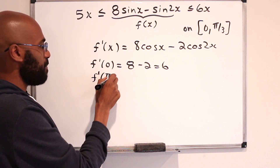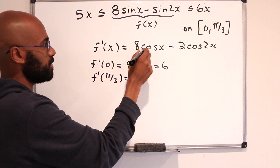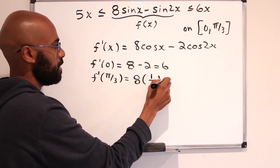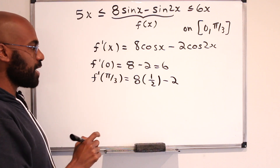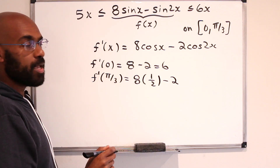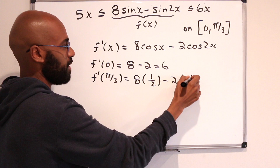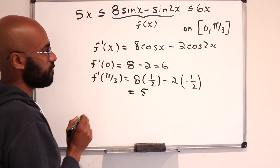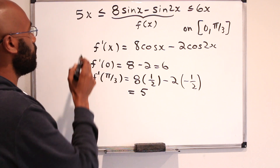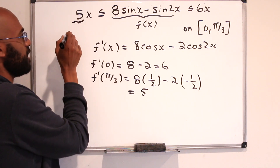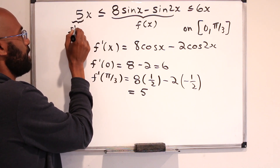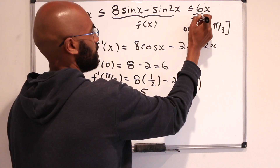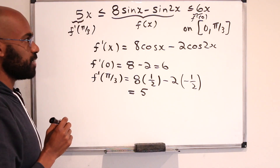Now the derivative at π/3 is 8cos(π/3). Since cos(π/3) = 1/2, that gives 4. Then minus 2cos(2π/3), and cos(2π/3) = -1/2, so that contributes +1. This works out to 4 plus 1, which is 5. So f'(π/3) = 5 and f'(0) = 6.